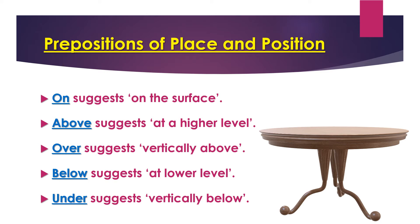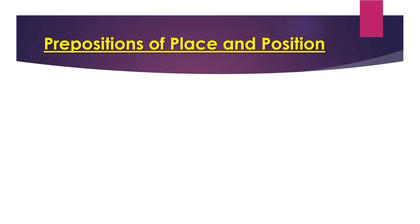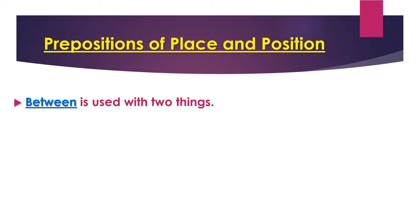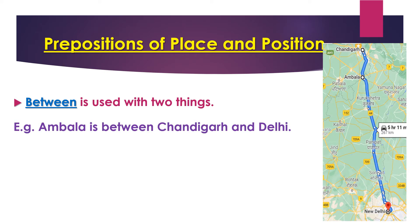There are more confusing prepositions: between and among. 'Between' is used with two things only. For example, Ambala is between Chandigarh and Delhi — I am talking about two places, and Ambala is in between them, so I use 'between' and not 'among.'